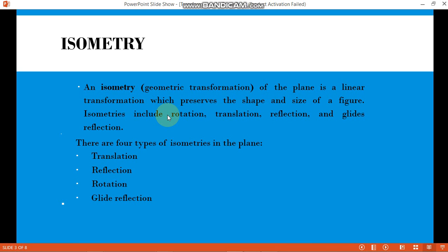Now let's talk about isometry. An isometry, or geometric transformation of the plane, is a linear transformation which preserves the shape and size of a figure. This includes rotation, translation, reflection, and glide reflection. In the next slides, I will discuss one by one the four types of isometrics in the plane.